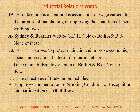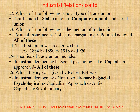Question 21: The objectives of trade union includes A. Employee compensation. B. Working condition. C. Recognition and participation. D. All. Correct option is D. All. Question 22: Which of the following is not a type of trade union? Correct option is C. Company union. Question 23: Which of the following is the method of trade union? A. Mutual insurance. B. Collective bargaining. C. Political action. D. All of these. Correct option is D. All of these.